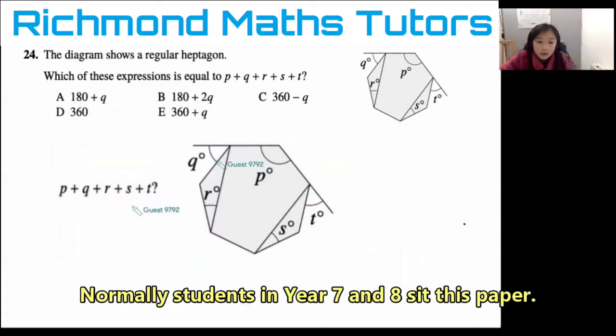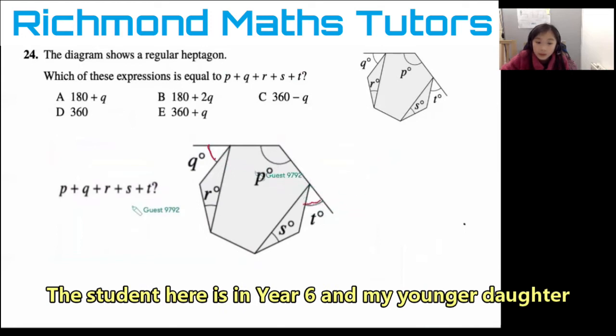As you can see, these are the exterior angles of a regular heptagon. Because it's a regular heptagon, P and Q are exactly the same. So these two are the same.